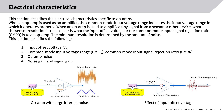When an op-amp is used as an amplifier, the common mode input voltage range indicates the input voltage range in which it operates properly. What sensor resolution is to a sensor is what the input offset voltage or the common mode input signal rejection ratio CMRR is to an op-amp. The minimum resolution is determined by the amount of noise. This section covers: 1) input offset voltage VIO, 2) common mode input voltage range CMV and CMRR, 3) op-amp noise, and 4) noise gain and signal gain.